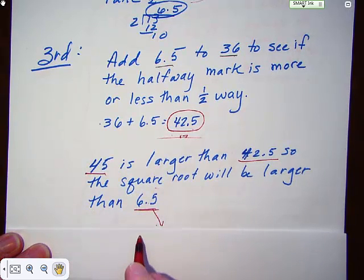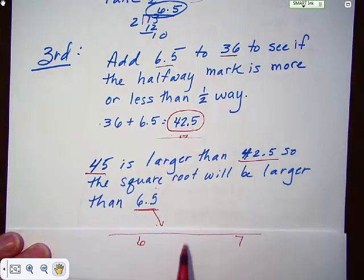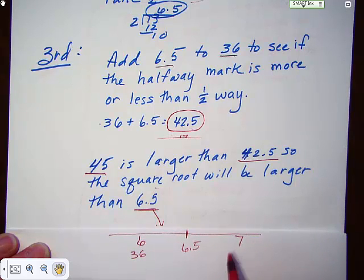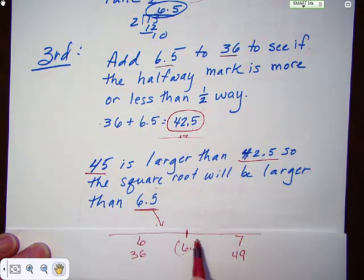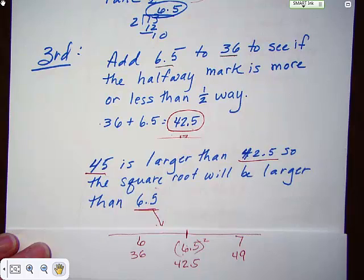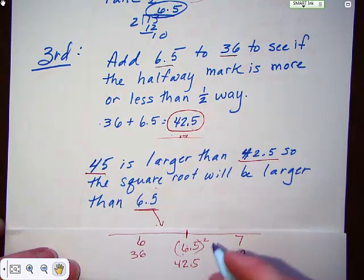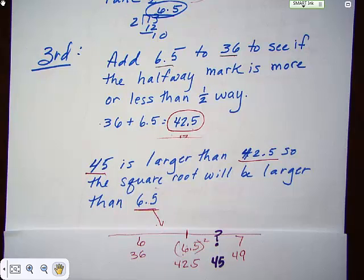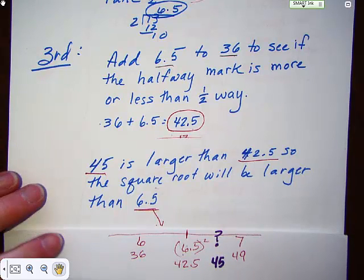So that's what this means. We were looking between 6 and 7, and we found what would be the middle, which is 6.5. If we square 6.5, we're going to get 42.5. Now, the number we're actually looking for is not 42.5, but it is 45. So our question is: what number squared will get as close as possible to 45?